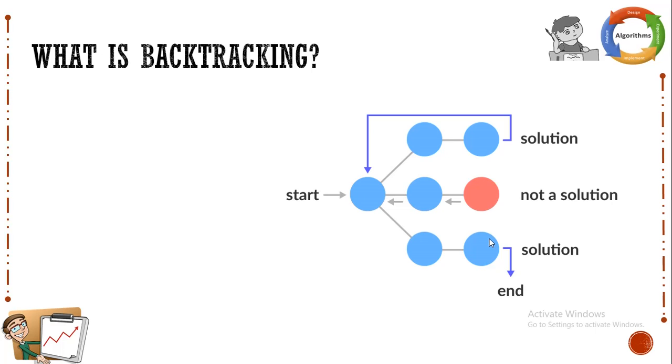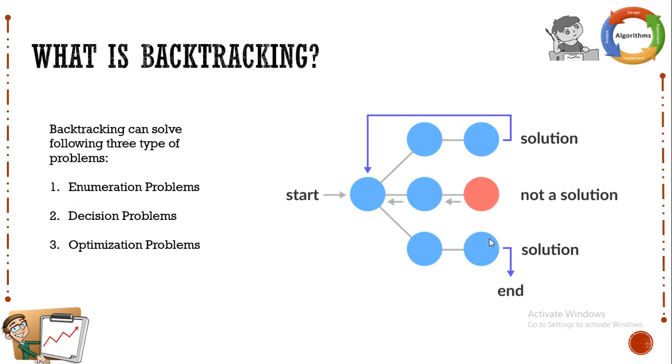So now let us try to understand what problems can be solved with the help of backtracking. The first one is enumeration problems. Basically, the enumeration problems are the ones wherein all solutions are listed for a given problem.